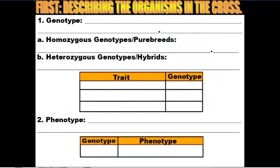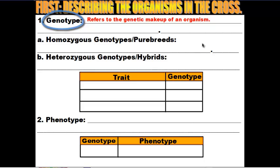There are several terms that you need to know and we're going to start with them one by one. The first term is the word genotype. The word genotype refers to the genetic makeup of an organism. When we take a look at the genotype of an organism, we always represent it by using letters — for example, capital X capital X, capital X lowercase x, or lowercase x lowercase x. These letters can vary depending on the trait.